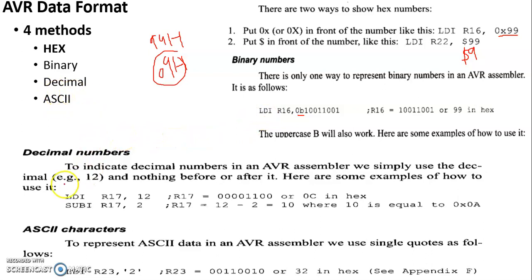Another format is the decimal data format. AVR supports decimal representation. For decimal, we simply use the decimal number directly — for example, 12 represents the decimal value 12.